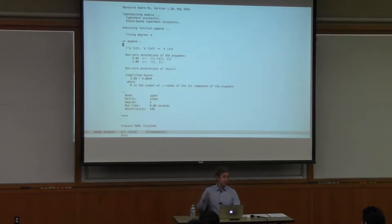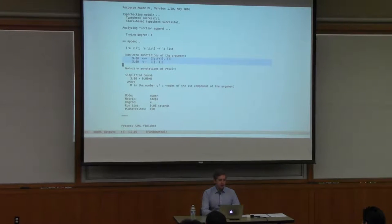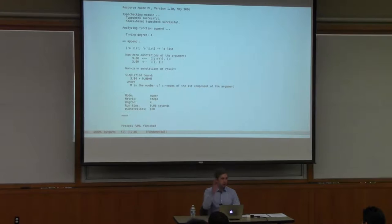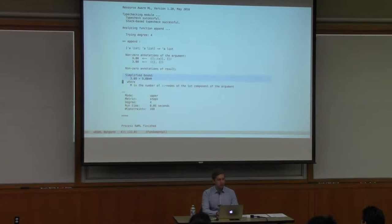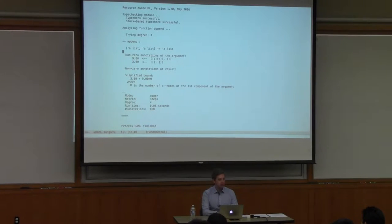You can give a degree that's too high and it will still find a tight bound in most cases. What you see here are the so-called potential annotations, attached to the arguments of the function—to the pair of lists—in a global way. In the linear system you have one annotation on each list type, but here in resource-aware ML you have a type and a global annotation with a coefficient for N squared, N times M, and so on. The readable version says: 9 times M plus 3, where M is the number of cons nodes in the first list—basically 9 times the length of the first list plus 3.